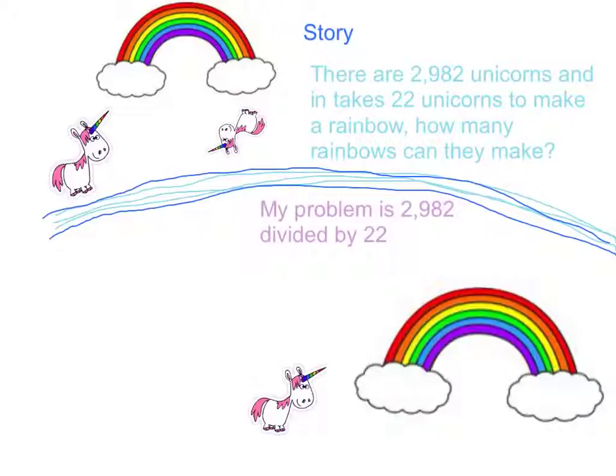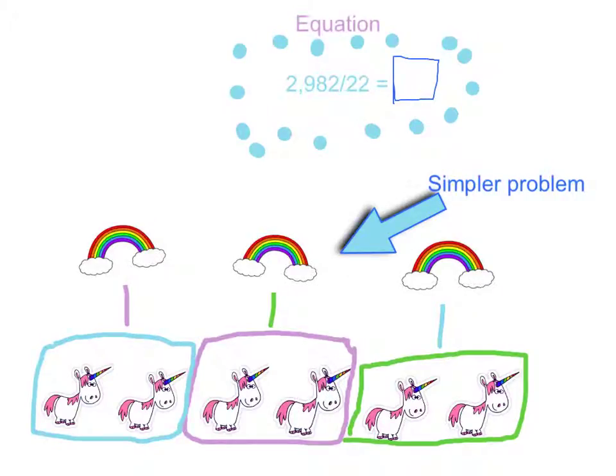My problem is 2,982 divided by 22. This is my equation, and it's blank at the end because I'm going to solve it later.